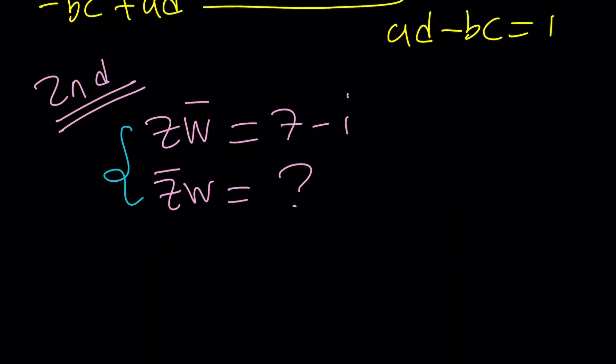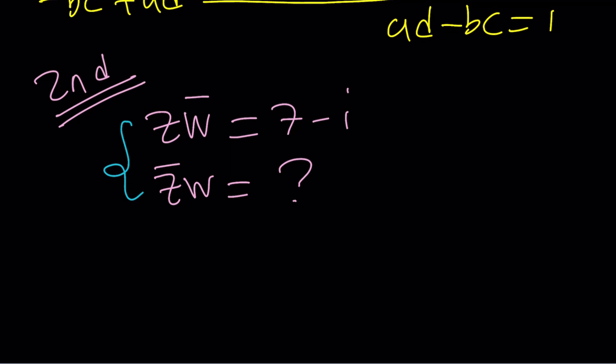Here's how the property works. You can definitely prove it, and we kind of did. If you conjugate a product like ZW, that's just Z bar times W bar. So you can bar each factor. This means something super nice. If you conjugate Z times W bar, that's the same thing as Z bar times W, which is what the answer is. In other words, if you just conjugate 7 minus i, you get the answer: 7 plus i.